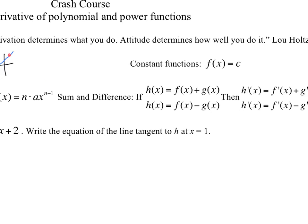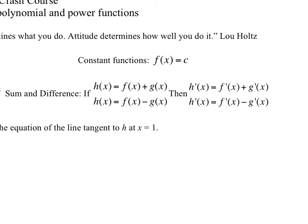Similarly, for constant functions — if I have a function where y is equal to c, a constant function is a horizontal line. So the slope of that line is going to be equal to zero no matter where we are on that constant function.